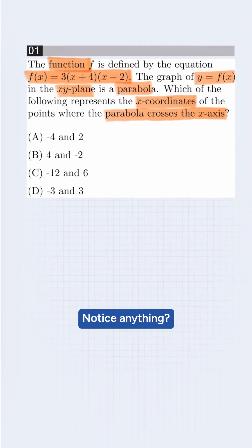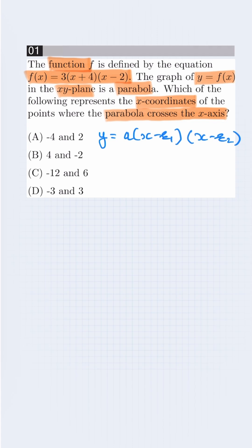Notice anything? The equation is given in factored form, which is y = a(x - r1)(x - r2). r1 and r2 are represented by solutions, roots, or x-intercepts.